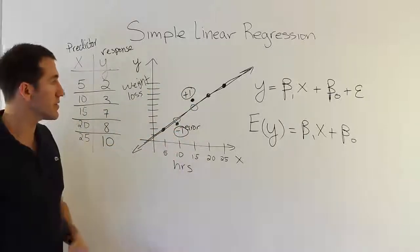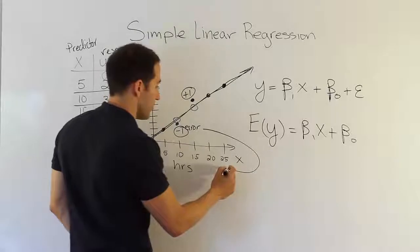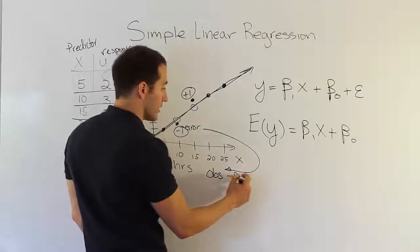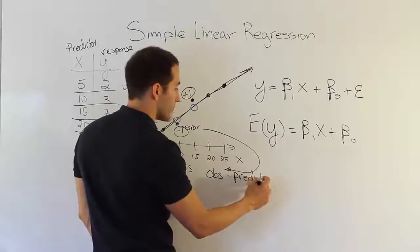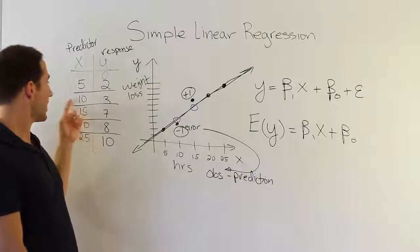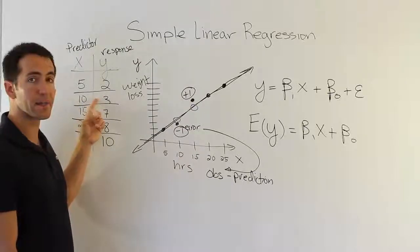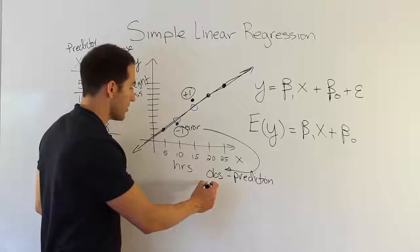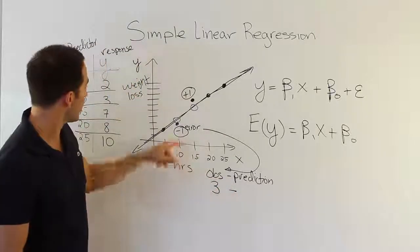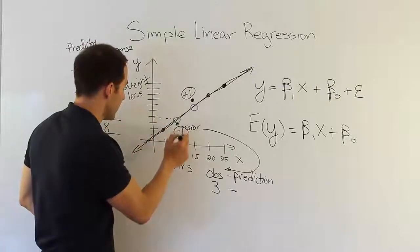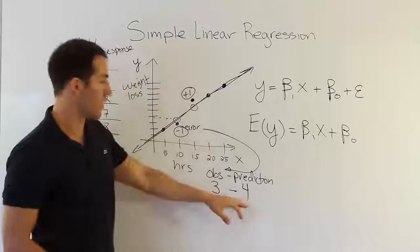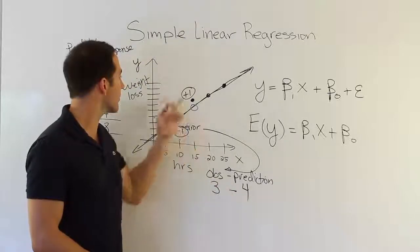The error term is actually very simple. The error term here is simply the difference between the observation and the prediction. So for example, if I observe, in reality, that at ten hours in the gym, there was three pounds of weight loss. If that's what I actually observed, I would have an observation there from S3. But my line predicts it to be ten and four. So you can see there, my line predicts it should have been four. So my prediction error there is going to be negative one then. So that's where I got that negative one from.